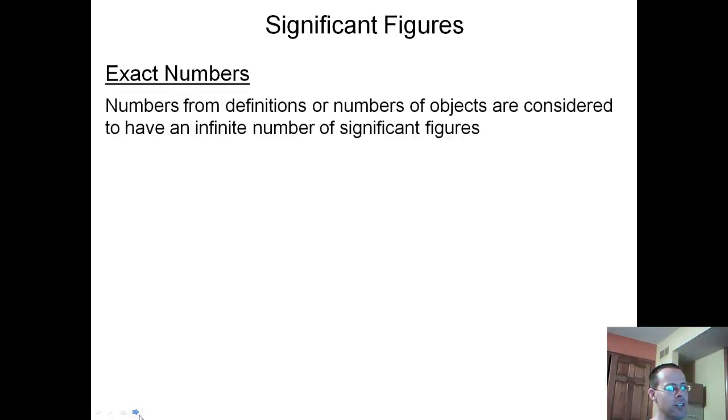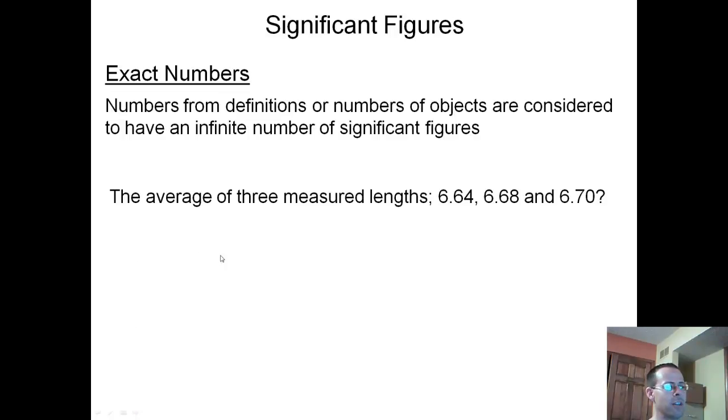Exact numbers: numbers from definitions or numbers of objects are considered to have an infinite number of significant figures. So when we say 1 meter equals 100 centimeters, both of those numbers have infinite numbers of sig figs. They are exact numbers, it's a definition. Another example: the average of these three measurements, 6.64, 6.68, 6.67. We add them together. Because they all have two decimal places, our answer is going to have two decimal places. Then we're going to divide by 3. But if we look at the numbers we start with, we had 3 sig figs, 3 sig figs, 3 sig figs, so our answer should have 3. This 3 does not mean 1 sig fig because it is an average, it is an exact number. So this is our correct answer.